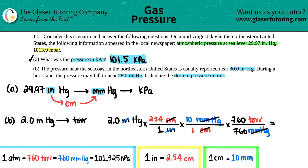The calculation is: 2 times 2.54 times 10 — and that's it, since the Torr/mmHg ratio is 1-to-1. There were two significant figures, so the answer is 51 Torr, which is the same as 51 millimeters of mercury. Letter B is done.